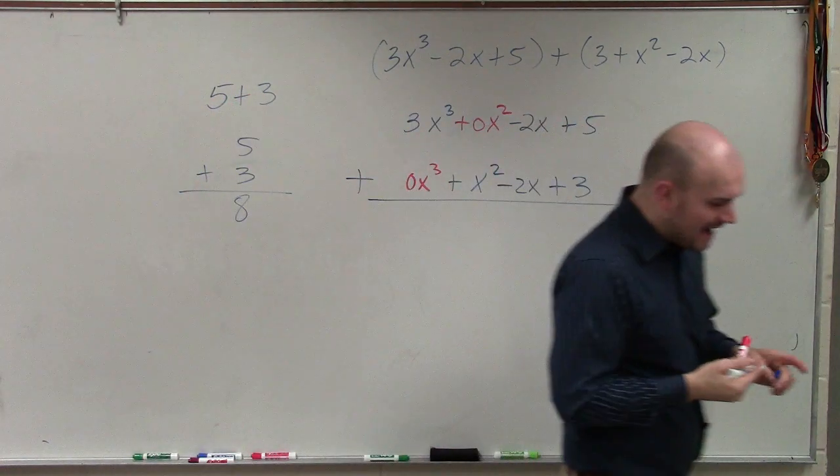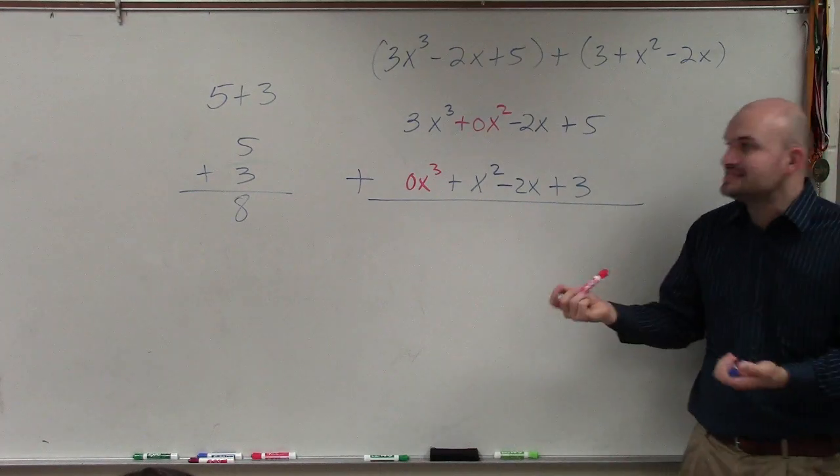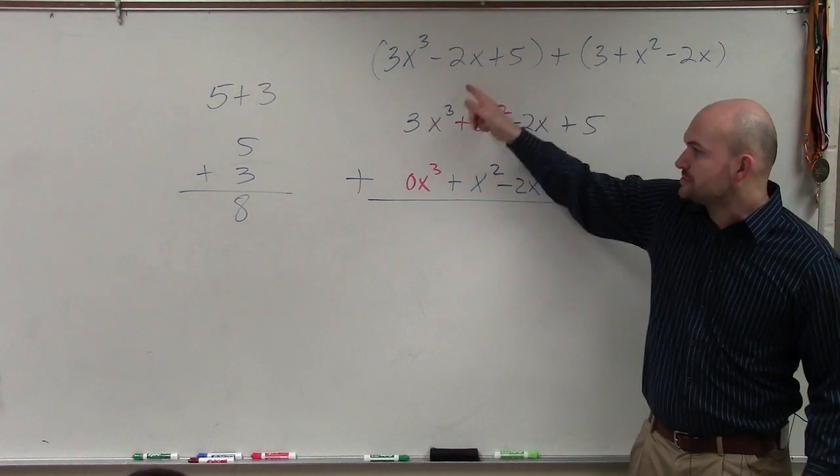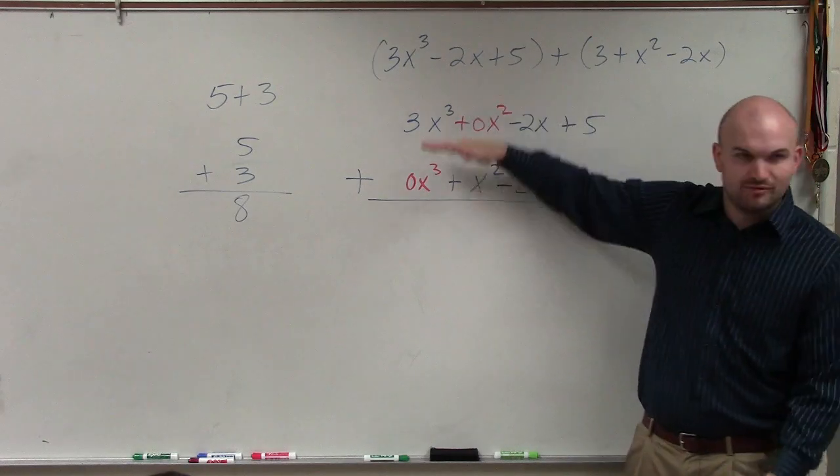So you don't have to write the place value, but I just want you guys to see that when you now add these vertically, 3x cubed plus 0x cubed, you're basically really just bringing that down.